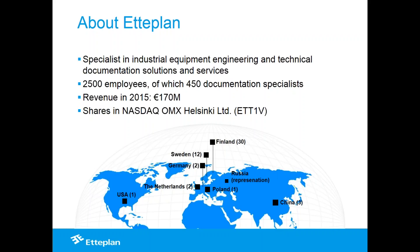Out of 2,500 employees, about 2,000 are in engineering, and approximately 450 are documentation specialists. If you're in technical documentation — whether an author, manager, or another role — we are like you, just with a different roof overhead. We have 450 people writing, illustrating, managing, and publishing documentation daily. We're a publicly listed firm with 58 offices, headquartered in Finland, with presence in Sweden, Germany, the Netherlands, Poland, Russia, three offices in China, and the United States.